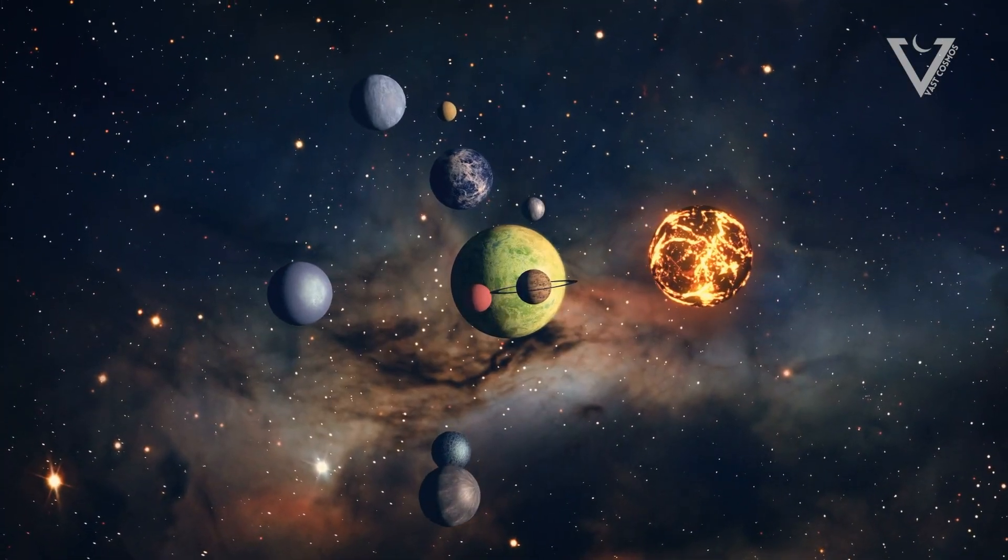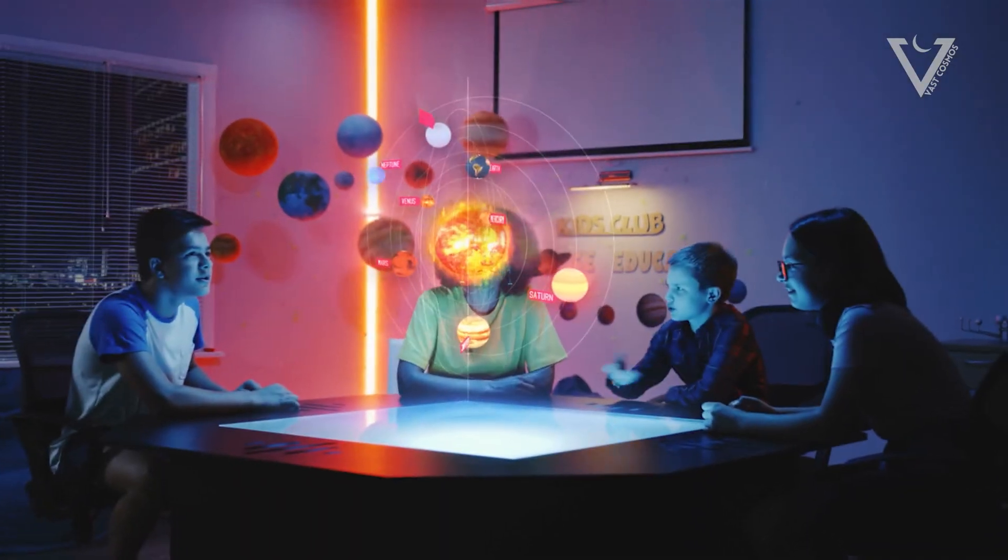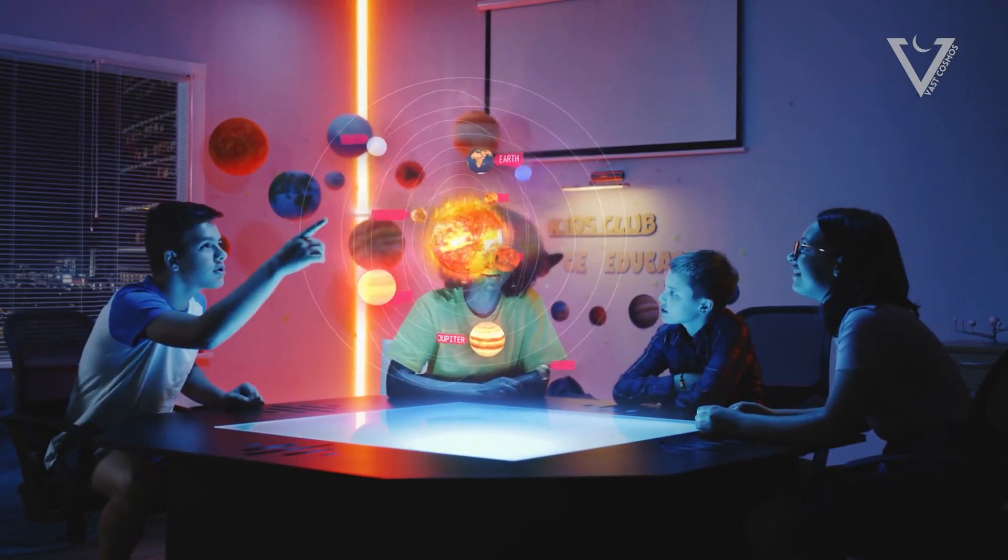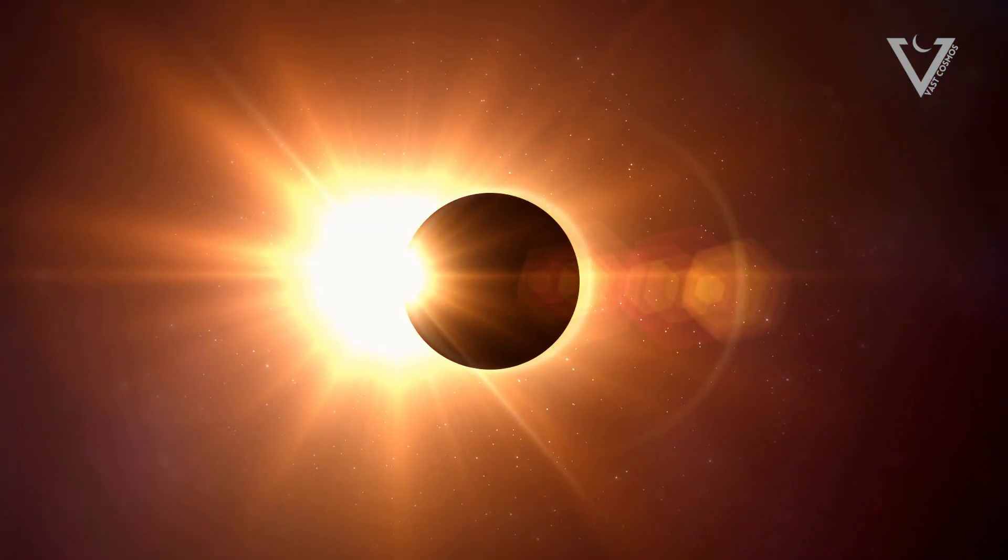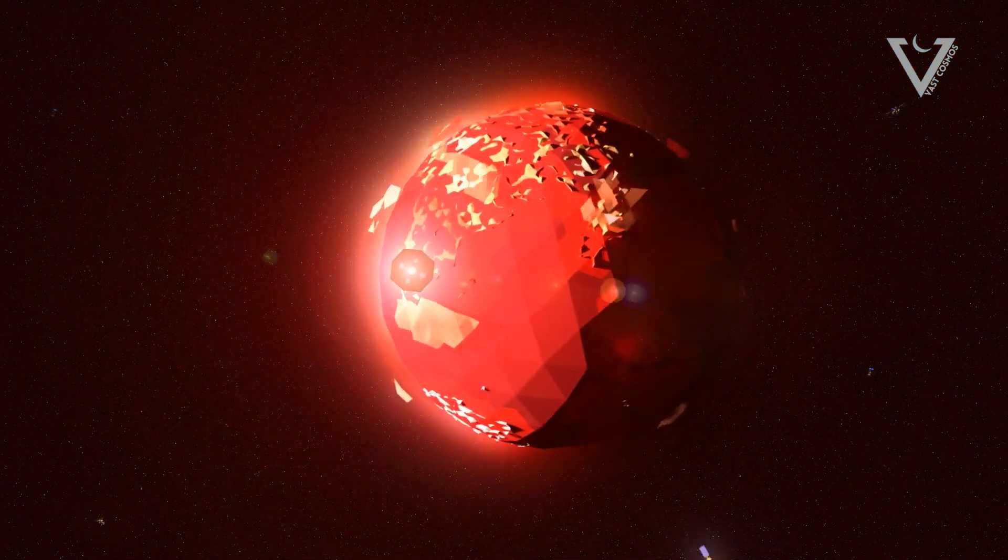Right now, scientists have found 3,730 confirmed exoplanets, 2,724 potential ones, and 2,783 systems with planets. Here's a list of five super crazy and scary planets I want to share with you.